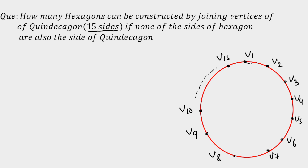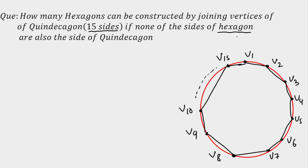Now if I join the vertices, I will get a quindecagon like this. Our question is: out of these 15 vertices, we have to select 6 in such a way that the sides of the hexagon are not the sides of the quindecagon.